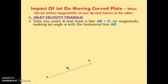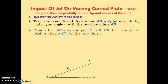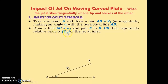Line AB, that is V1, makes an angle alpha with the horizontal line AD. We draw horizontal line AD, so this line AB makes angle alpha. Next, draw a line AC equal to U1, the velocity of the plate in the direction of motion. Then join C to B. Line CB then represents the relative velocity Vr1 of the jet at the inlet — CB is Vr1 and AC is U1.